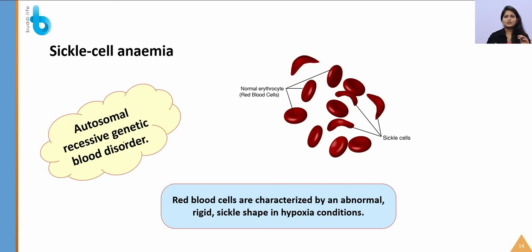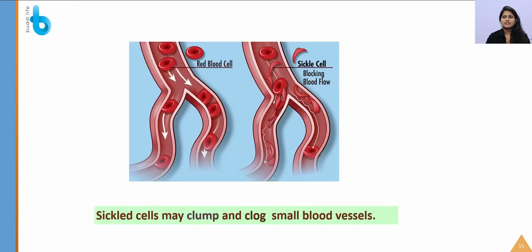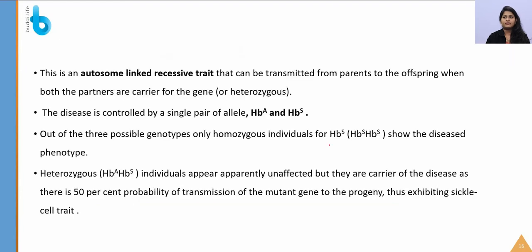Sickle cell anemia is an autosomal recessive genetic disorder. The RBCs are sickle-shaped under hypoxia conditions. They have reduced oxygen-carrying capacity, causing hypoxia, and can block and clog small blood vessels. It is an autosomal linked recessive trait controlled by a single pair of alleles: HbA (normal) and HbS (defective). A person with both HbS alleles will have sickle cell anemia.